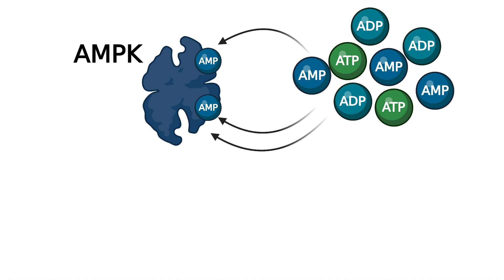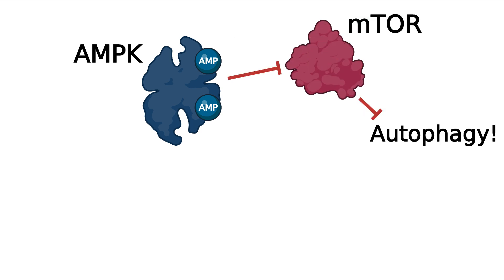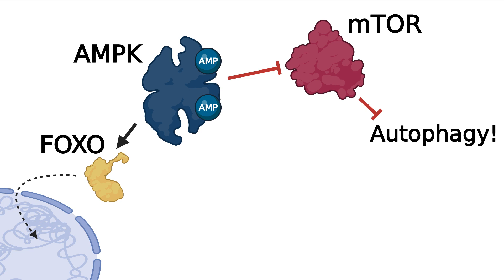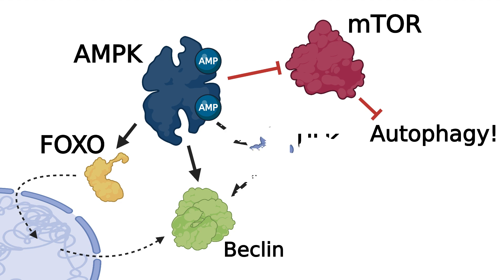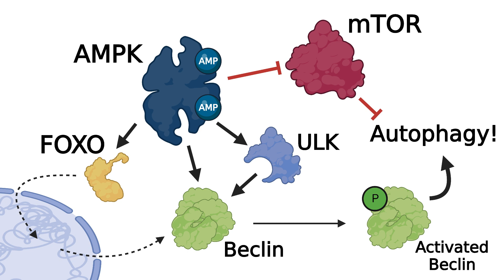AMPK is stimulated to be more active when low-energy molecules like AMP bind to it. So the cell has an activated AMPK protein, which then does a few things. It inhibits the mTOR master protein, which is tightly tied to growth of the cell. Second, it activates another protein called FOXO, which will then go into the cell's nucleus and tell it to produce more autophagy-related proteins, like Beclin. Thirdly, AMPK will activate Beclin, either directly or indirectly, by activating another protein known as ULK. But the bottom line is, Beclin is active.